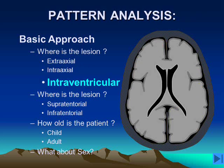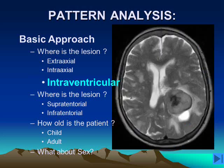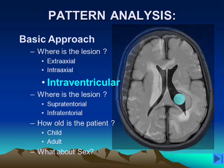A third location for intracranial lesions is within the cerebral ventricles. There are two lateral ventricles, a third and a fourth ventricle. Most commonly, intraventricular masses are seen within the lateral ventricle, and the most common location for a lateral ventricular mass is in the region called the atrium or trigone. These lesions are typically related to the choroid plexus, which is in this location. This is a patient that has an intraventricular meningioma — we can see how the lesion is located in the trigone of the patient's left lateral ventricle on the right side of the image.